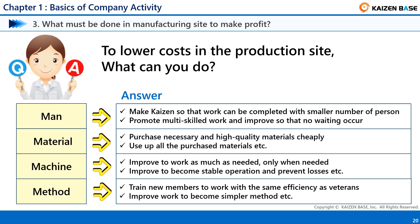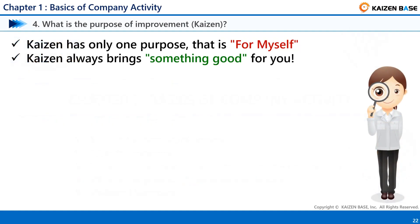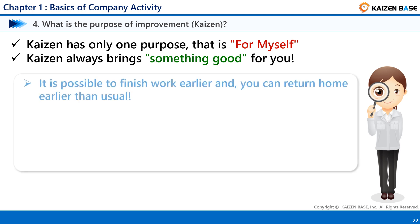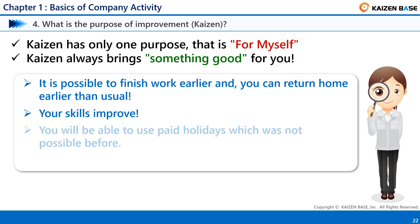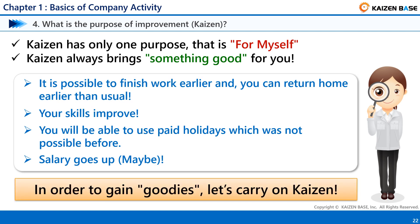Applying the above-mentioned various production cost reductions, Kaizen will be carried out at the targeted work for improvement. Kaizen has only one purpose — that is for yourself. Kaizen always brings something good for you. For example, it is possible to finish work earlier and return home sooner than usual. Your skills improve. You will be able to use paid holidays which was not possible before. Maybe your salary goes up. The results of working hard in Kaizen activities will always return to you. In order to gain these benefits, let's carry on with Kaizen.